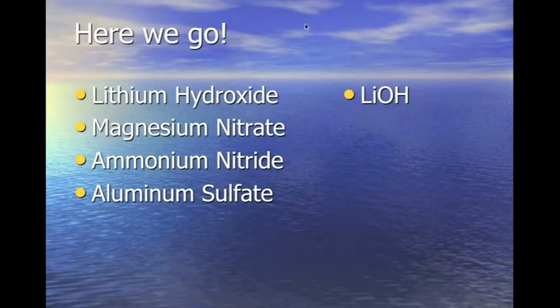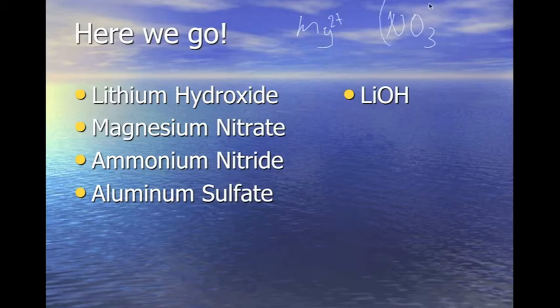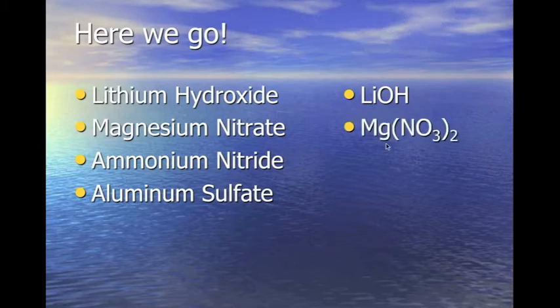Magnesium nitrate. We have magnesium and nitrate, which is NO3. Magnesium has a plus two oxidation number and nitrate is negative one. So we're going to crisscross those and we will get where the two comes outside the parentheses.